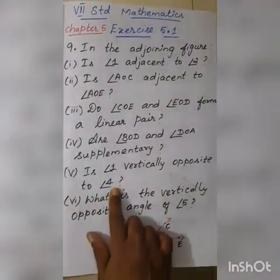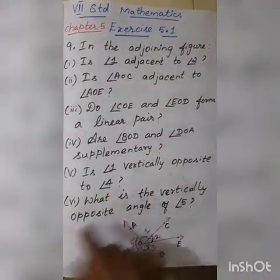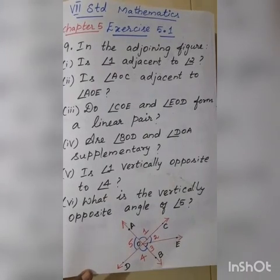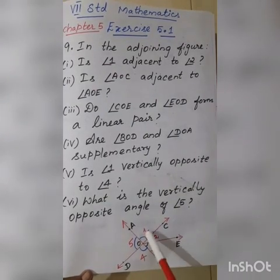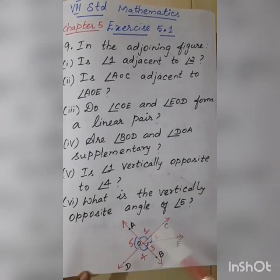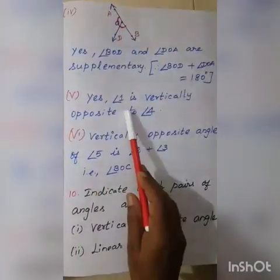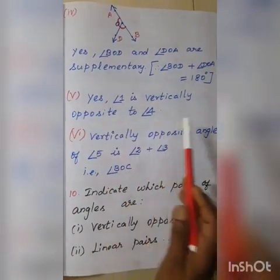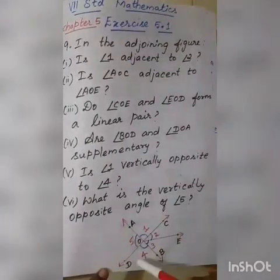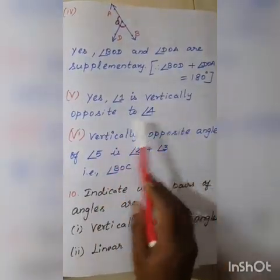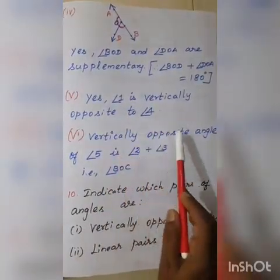The fifth question: is angle 1 vertically opposite to angle 4? Angle 1 is vertically opposite to angle 4. Looking at the figure, angle 1 and angle 4 are in opposite positions. So the answer is yes — angle 1 is vertically opposite to angle 4.